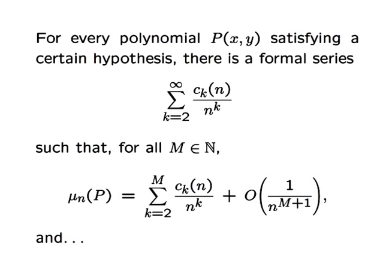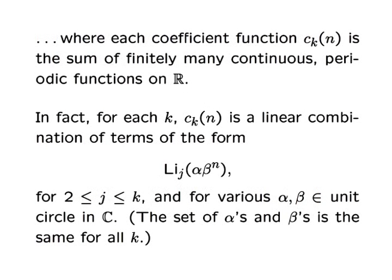In the paper, I give explicit formulas for these coefficient functions that here are denoted c sub k of n. The details of the formula are involved, but in brief, each coefficient turns out to be a linear combination of polylogarithms of points that are moving cyclically around the complex unit circle. In particular, each coefficient function can be expressed as the restriction to the whole numbers of the sum of finitely many continuous periodic functions. In fact, the set of periods of the underlying summands is the same for each coefficient function.